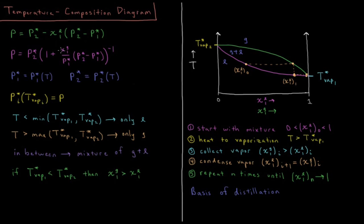We saw something different if we expressed this in terms of the mole fraction of component 1 in the vapor. If component 1 had a higher vapor pressure, then it is the more volatile component, and the gas should have a higher mole fraction of 1 than the liquid does. The total vapor pressure equals the vapor pressure of pure liquid 2 plus 1 over — notice there is a to the minus 1 power here — 1 over 1 plus χ1g divided by P1* times P2* minus P1*.